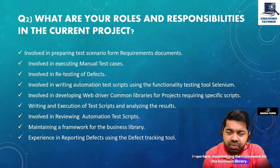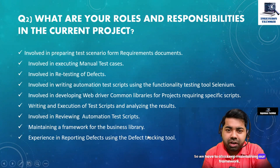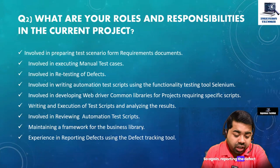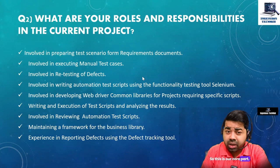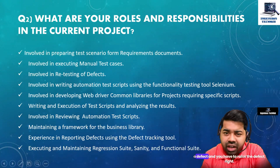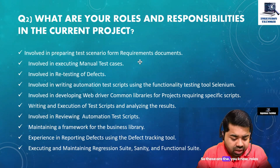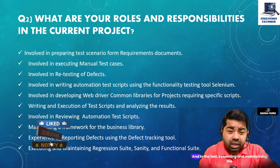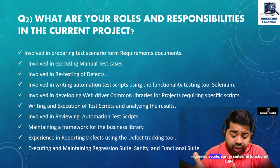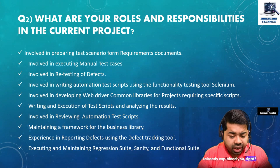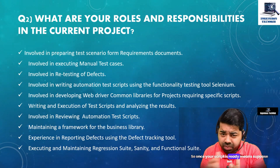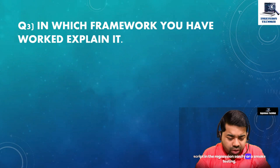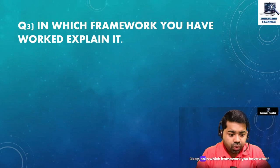You also maintain the framework for the business library — if any new requirement or enhancement is needed, you update it. Reporting defects using a defect tracking tool is a core part of a tester's role. Finally, you are involved in executing and maintaining the regression suite, sanity suite, and functional suite. Once 200 test cases are ready, you can split them into regression, sanity, or smoke testing.